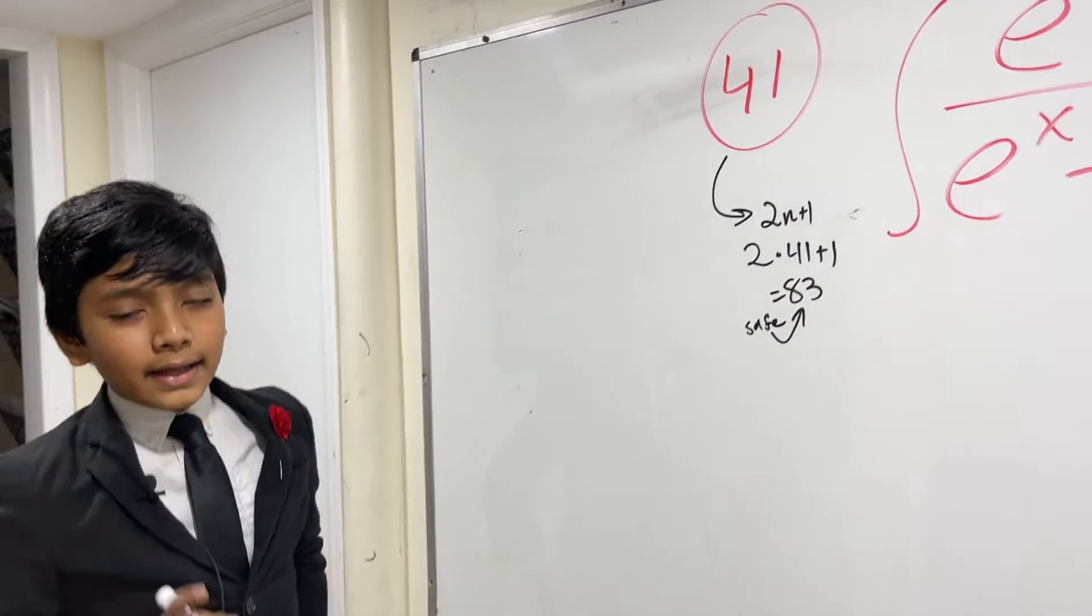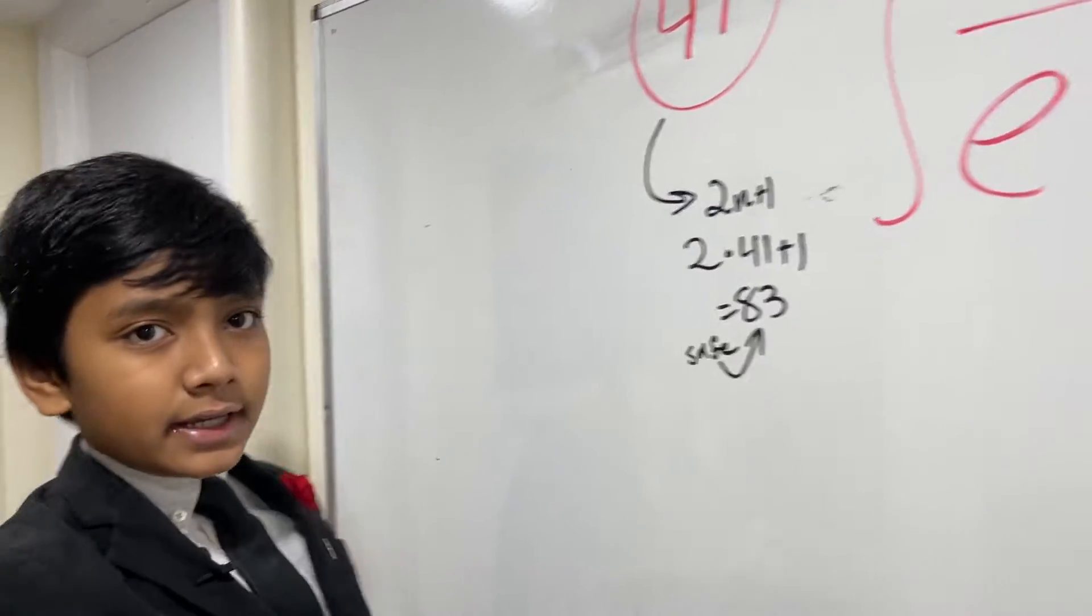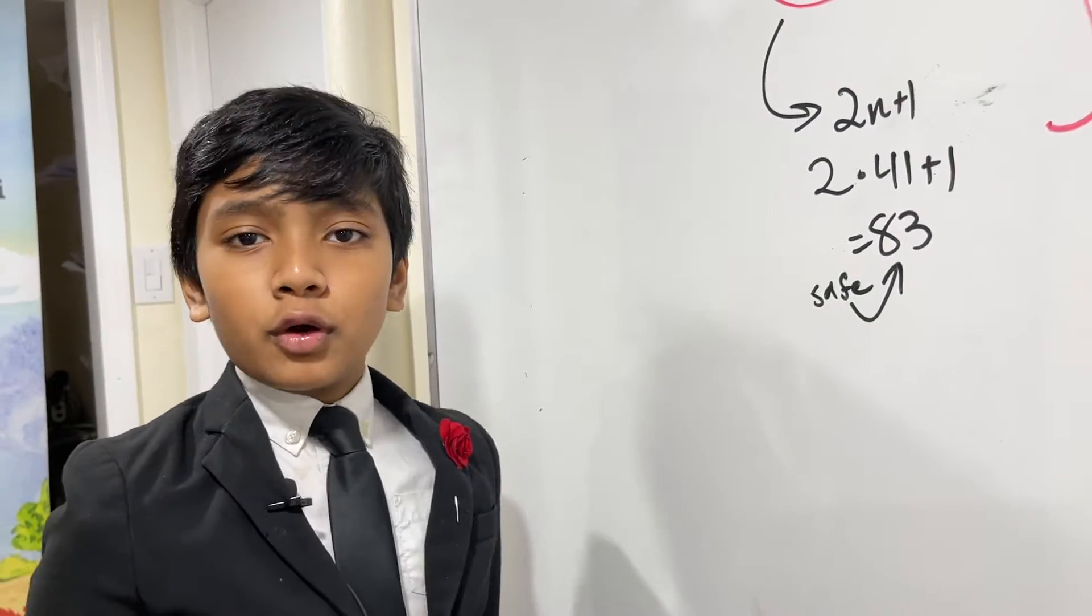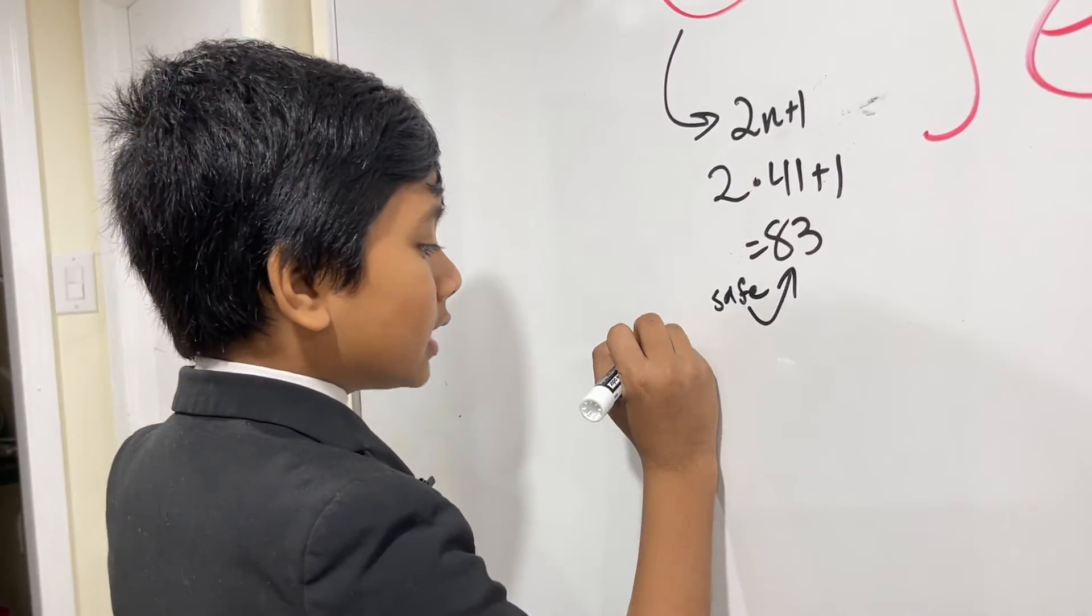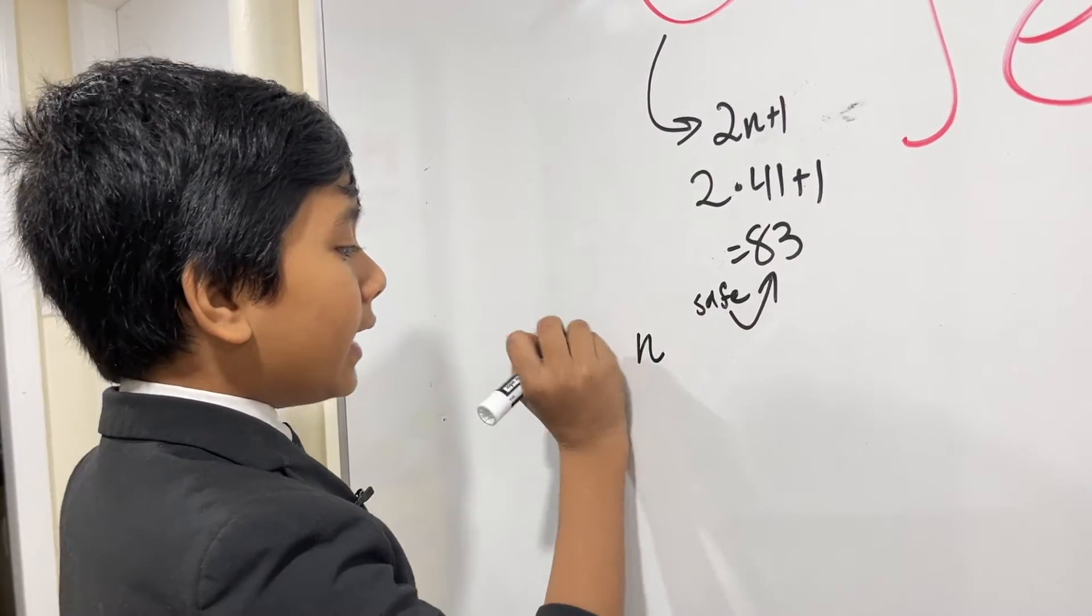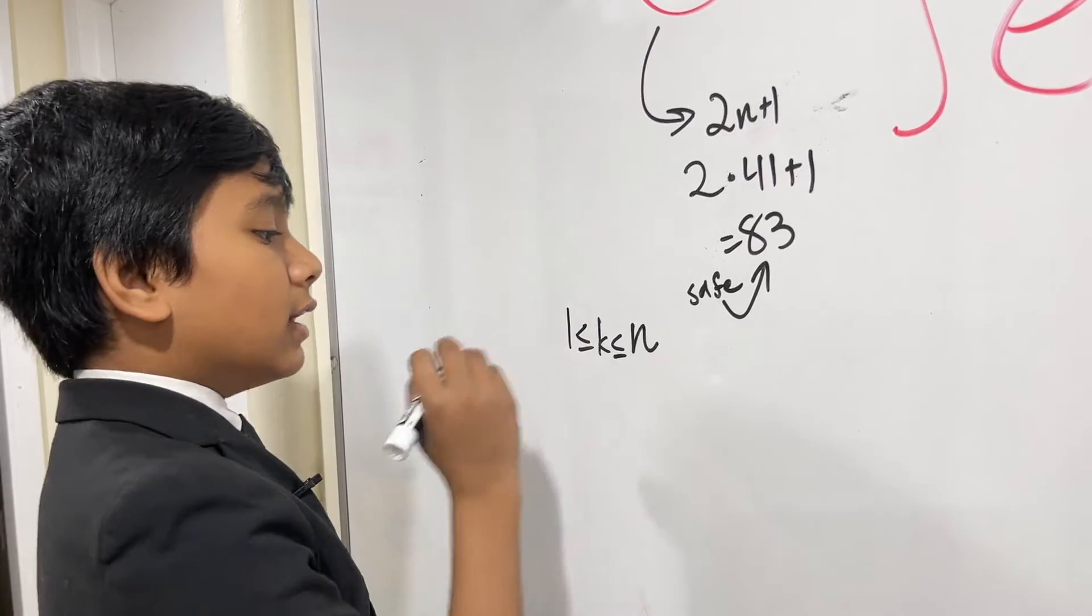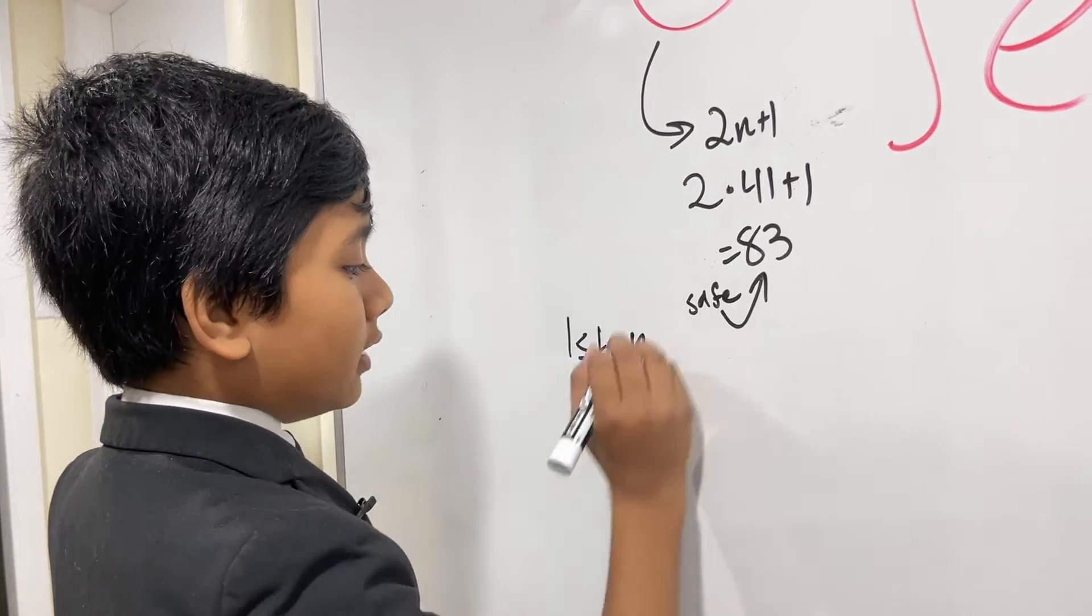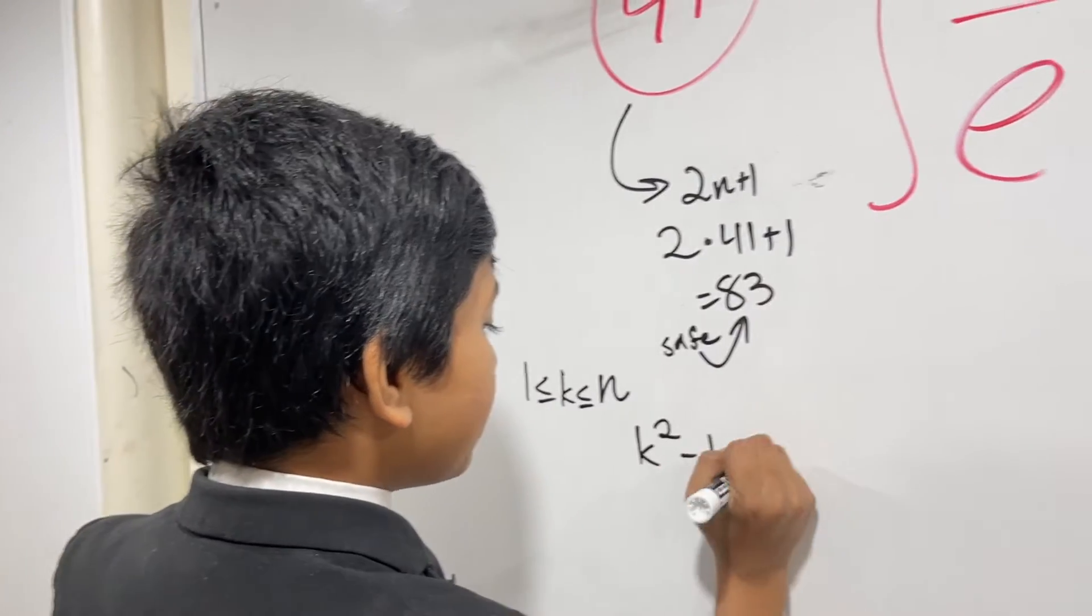Also, this is the last and biggest lucky number of Euler. What are Euler's lucky numbers? Well, they are numbers such that for a number n, 1 is less than k is less than or equal to n, k squared minus k plus n.